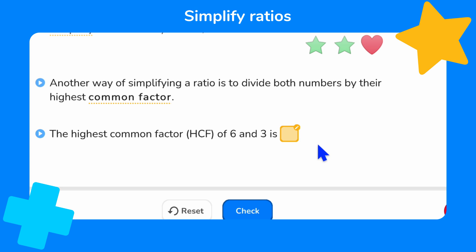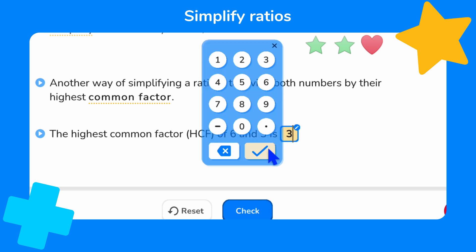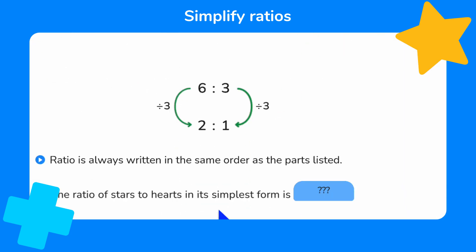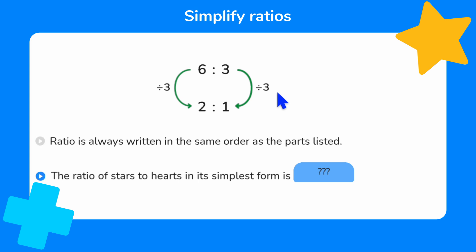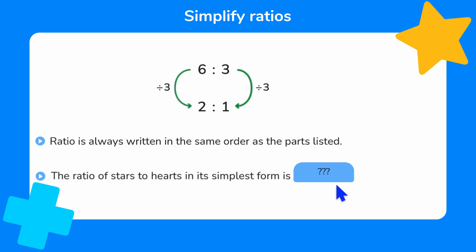We need to find the highest common factor of six and three. The factors of six are 1, 2, 3 and 6. And the factors of three are 1 and 3. So the highest common factor must be three. This diagram shows that each part of the ratio can be divided by the highest common factor, which is three. Ratio is always written in the same order as the parts listed, so here we have the six stars written first, followed by the three hearts. To work out this ratio in its simplest form, we divide both parts by three. So the ratio of stars to hearts in its simplest form is two to one.